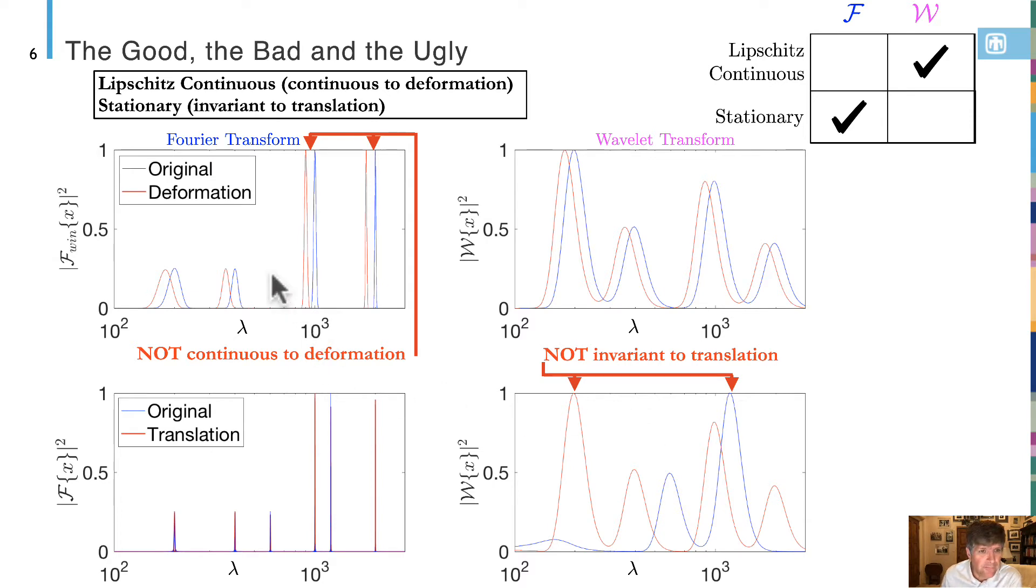Stefan Mallat realized that the Fourier transform has a problem in that it's not continuous to small deformations. Here you can see an example where the Fourier transform of a signal when it's had a small deformation at large wave numbers shows large differences. This is the origin of the singularities in renormalization group theory, which also uses a Fourier basis. But as well known, the Fourier transform is invariant to translation. The opposite is true of the wavelet transformation - it is continuous to small deformations, but it is manifestly, because of its time dependence, not invariant to translation.